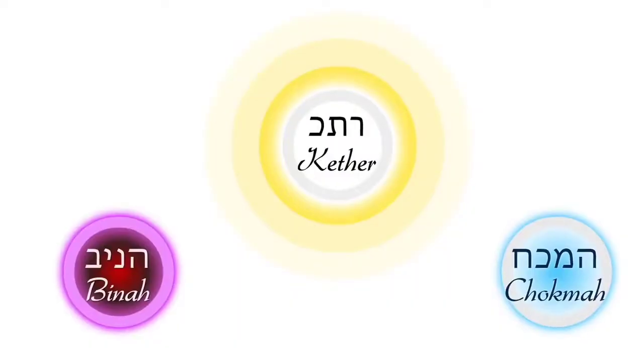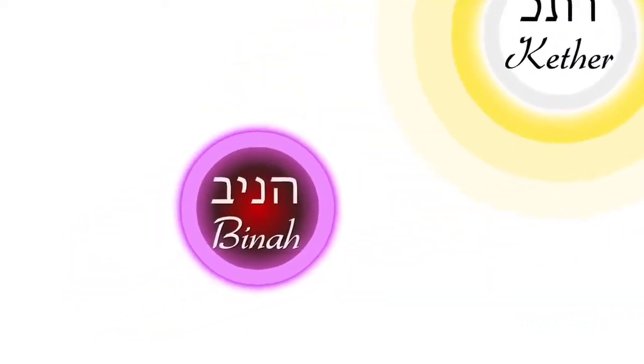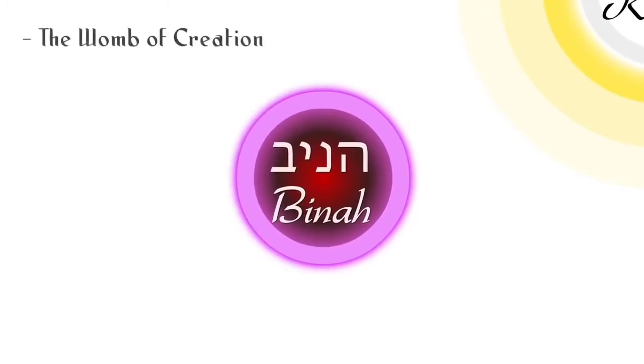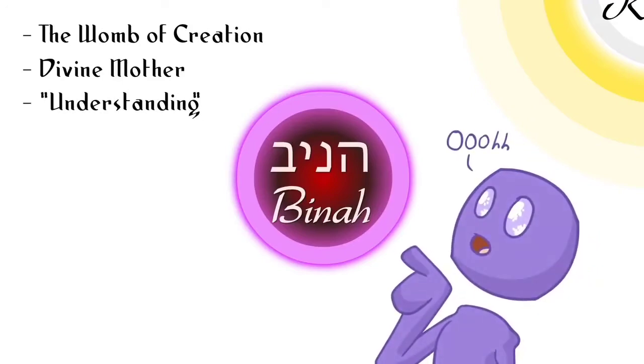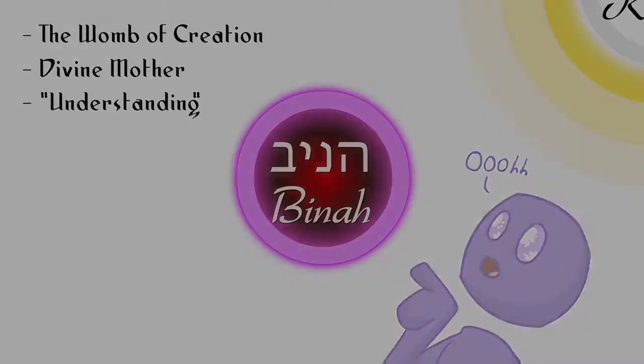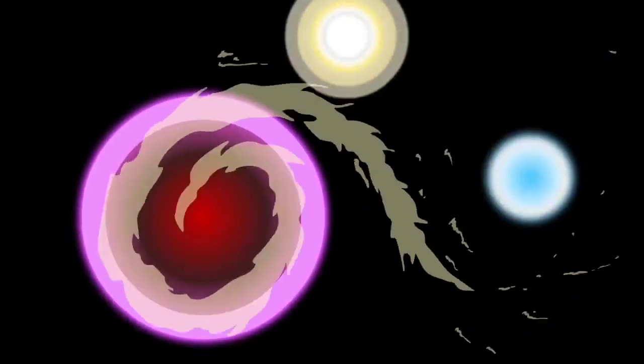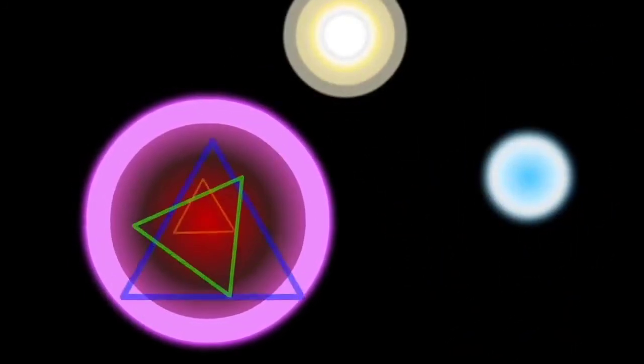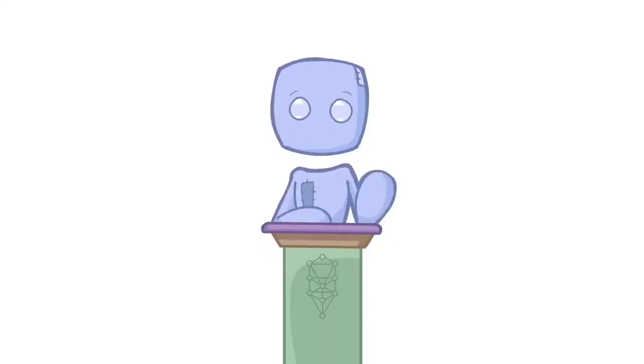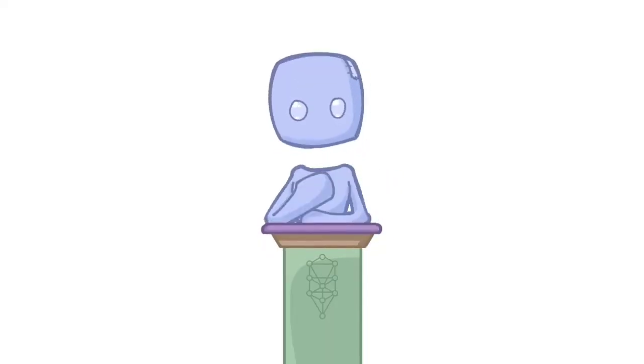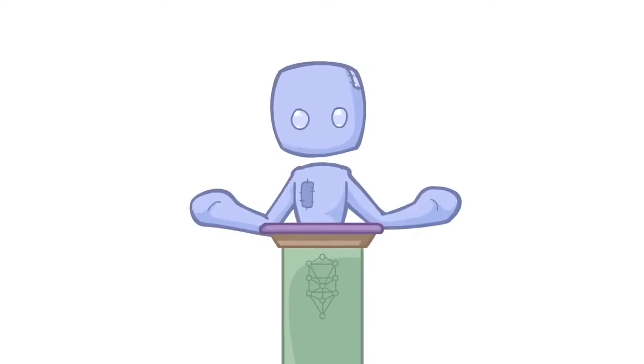Binah is the third Sephira, the mirror of Chokmah on the left side of the tree, and represents the womb of creation. She is the divine mother, the female potency of the universe. Binah translates to understanding, because it is here that we find true understanding of what the purpose of this energy shall become. She is the one who receives the created disorganized energy from Chokmah and applies the basis of form and stabilization to it. This is a very sacred space, because without Binah, there would be literally nothing in existence.